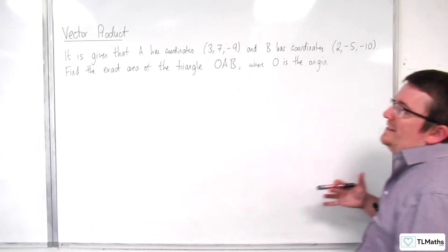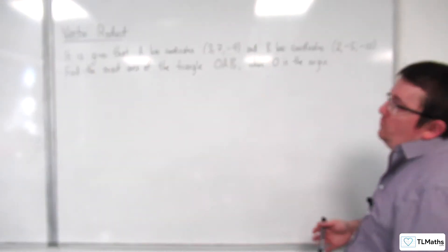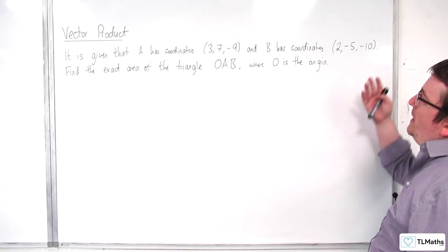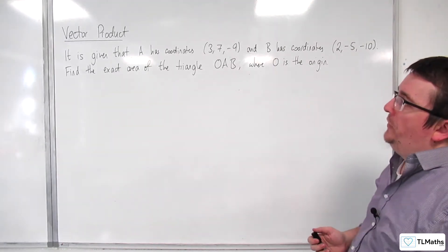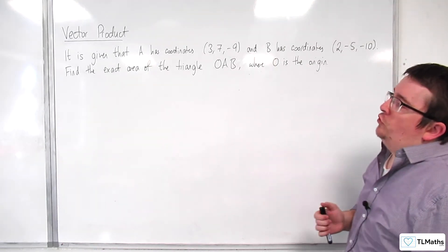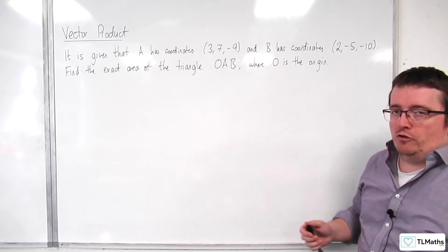In this problem, it is given that A has coordinates (3, 7, -9) and B has coordinates (2, -5, -10). Find the exact area of the triangle OAB, where O is the origin.